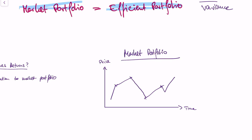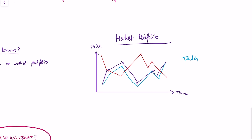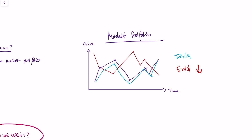Consider the stock of Tesla. If Tesla moves very closely to the market portfolio, there is little diversification from Tesla. Now take another asset — gold. Gold moves inversely to the market portfolio. Every time the market portfolio goes up, gold goes down and vice versa. This means gold decreases the variance of the market portfolio, while Tesla increases the variance of the market portfolio.